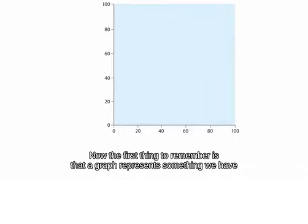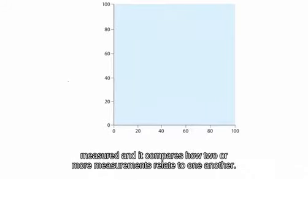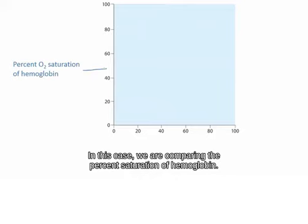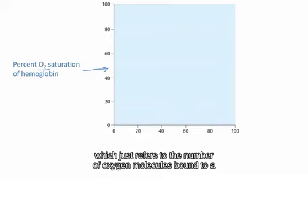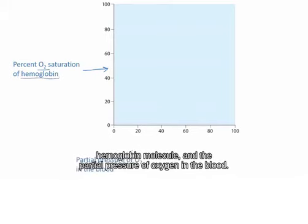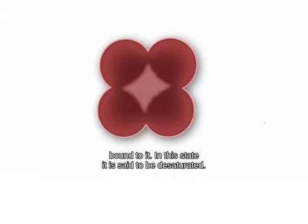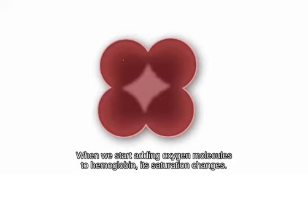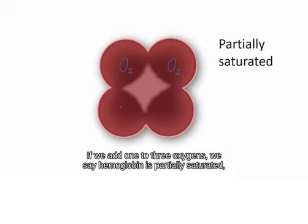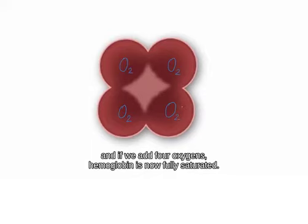We're comparing the percent saturation of hemoglobin — which refers to the number of oxygen molecules bound to a hemoglobin molecule — and the partial pressure of oxygen in the blood. A hemoglobin molecule can bind and transport up to four oxygen molecules. Here we have an empty hemoglobin with no oxygen bound to it — in this state it's said to be desaturated. When we start adding oxygen molecules to hemoglobin, its saturation changes. If we add one to three oxygens, we say hemoglobin is partially saturated; if we add four oxygens, hemoglobin is now fully saturated.